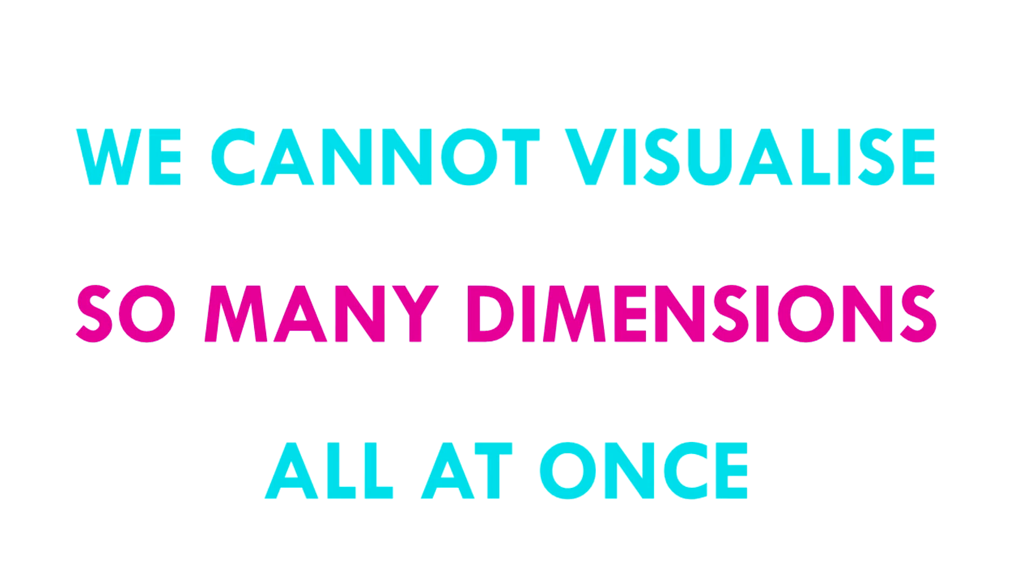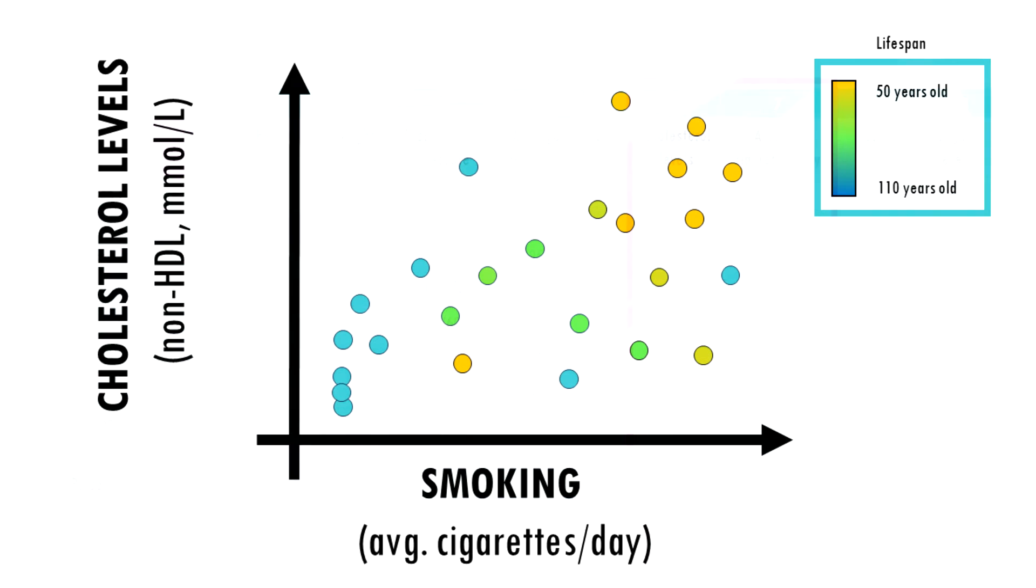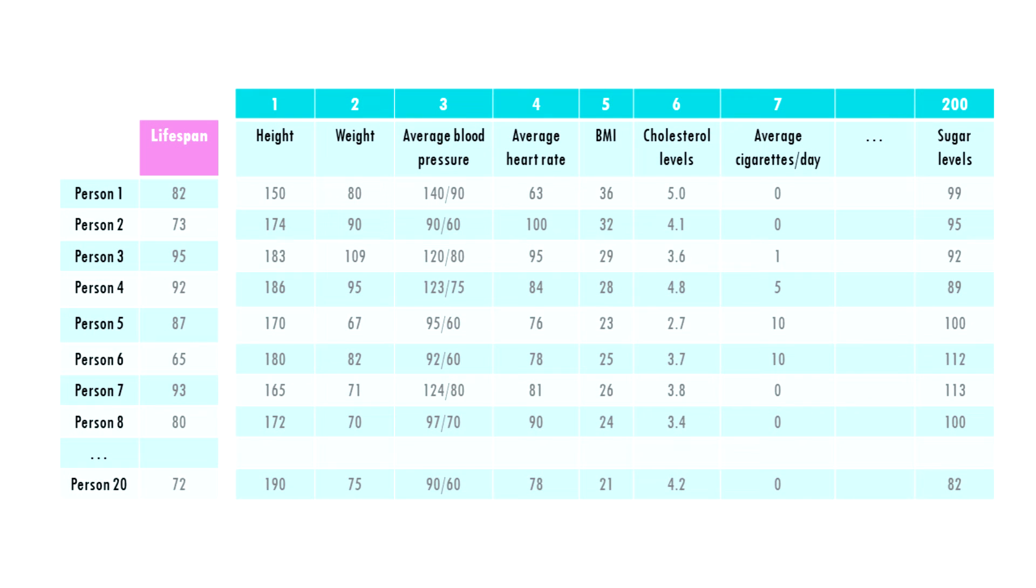In order to understand the data we need to visualize it first. But we cannot visualize so many dimensions all at once. We could, for example, pick two factors and plot them, like smoking and cholesterol levels. But we're losing valuable information contained in other factors of the data, such as weight or diet.